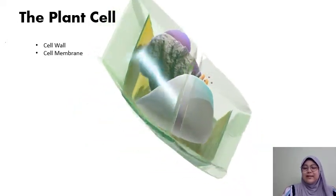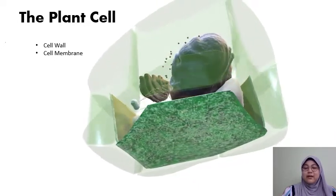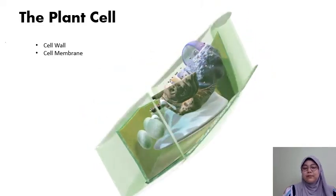Next, you would have the cell membrane. The cell membrane is actually the outer layer of a cell, and composed of fats and proteins, which is semi-permeable.